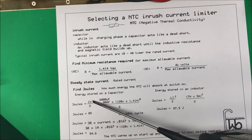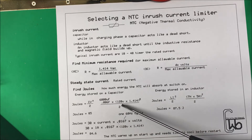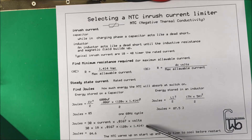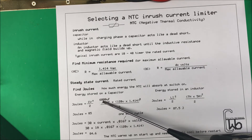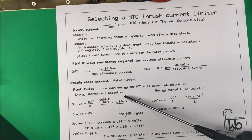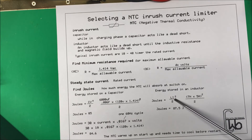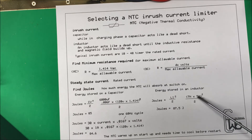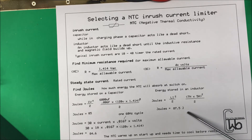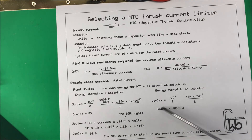For a capacitor, joules equals capacitance times peak voltage squared divided by 2. If you have 6,000 microfarads that comes out to about 85 joules, so your NTC has to handle that. For an inductor, joules equals inductance times amperage squared divided by 2. At 7 henries and 5 amps squared that comes out to about 87 joules.